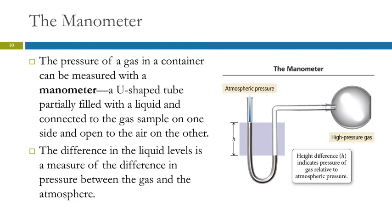A barometer measures atmospheric pressure. But what if we want to measure the pressure inside something? The manometer measures the pressure of a gas inside a container. Here's a simple manometer using mercury: the container is attached to a tube with a U-shaped bend containing mercury. If both ends were open to atmospheric pressure, the mercury levels would be equal.